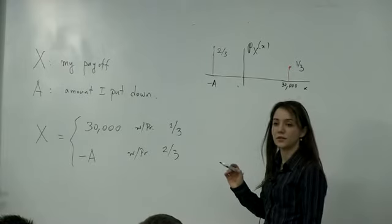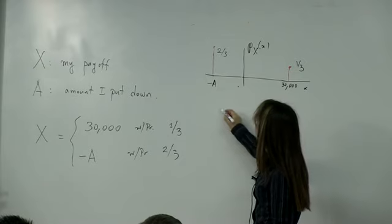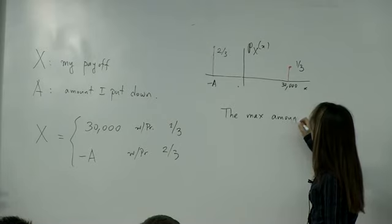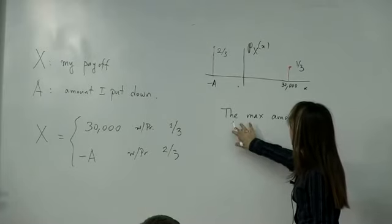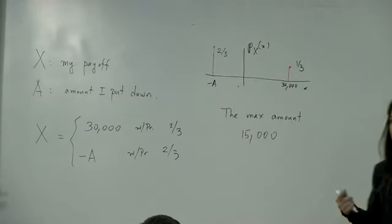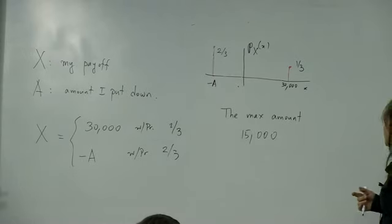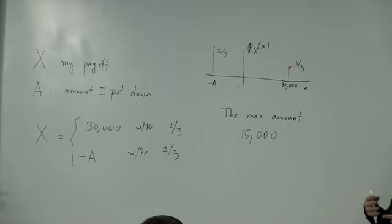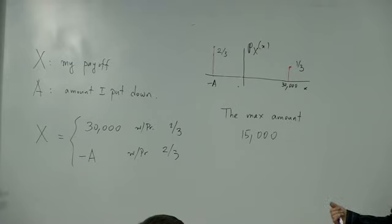The maximum amount would be fifteen thousand. Let's think about our reasoning: with probability 1/3, I expect to make 30,000. With probability 2/3, I expect to lose fifteen thousand. The loss of fifteen thousand times 2/3 is ten thousand. That just balances the expected gain of ten thousand.